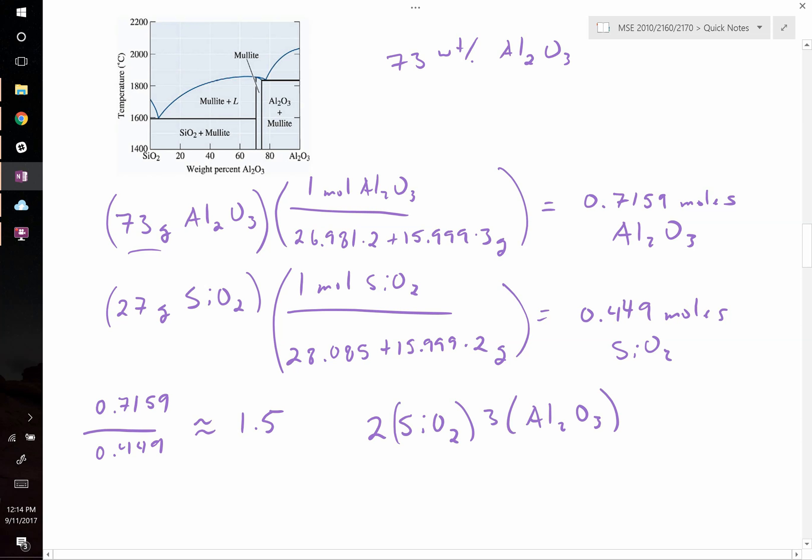In other words, for every two moles of SiO2 we have three moles of Al2O3. You can write this out however you'd like, you can multiply and distribute it. We could say Si2Al6, and then add up the oxygen: there's four from the SiO2 plus nine, so that would be O13. This is around the nominal formula for mullite. Oftentimes you'll simply see mullite written as 2SiO2 3Al2O3.